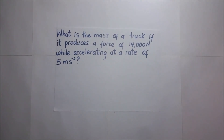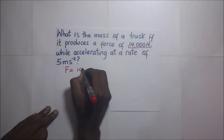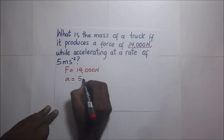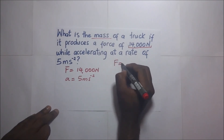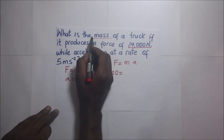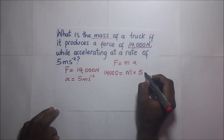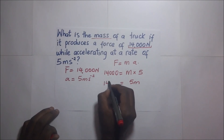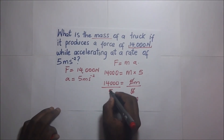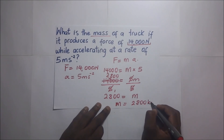Example 5: What is the mass of a truck if it produces a force of 14,000 Newtons while accelerating at 5 meters per second squared? Using F = ma: 14,000 = m × 5. Dividing both sides by 5, our mass is 2,800 kilograms.